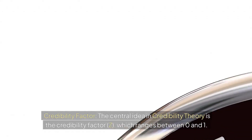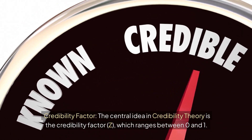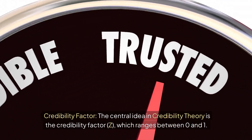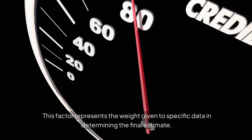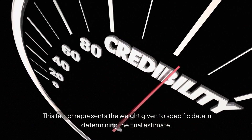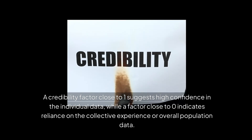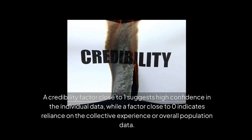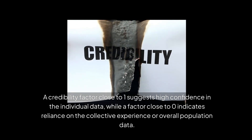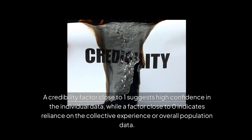The central idea in credibility theory is the credibility factor, Z, which ranges between 0 and 1. This factor represents the weight given to specific data in determining the final estimate. A credibility factor close to 1 suggests high confidence in the individual data, while a factor close to 0 indicates reliance on the collective experience or overall population data.